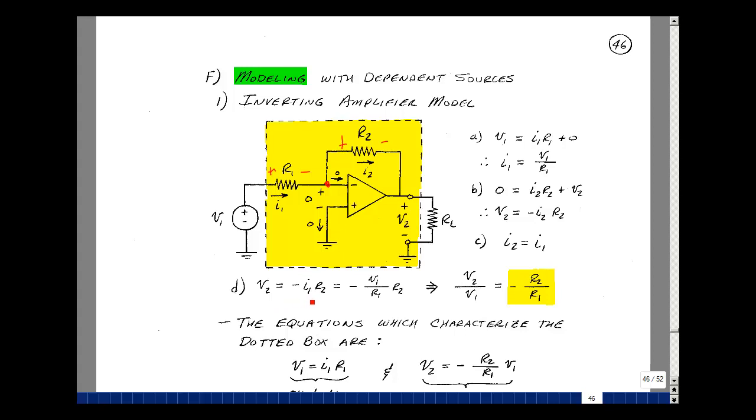V2 is equal to minus I2R2, but I2 is equal to I1, and I1 is equal to V1 over R1. Just exchange these two, and I then get that V2 is equal to minus R2 over R1 times V1. This would be our transfer function.